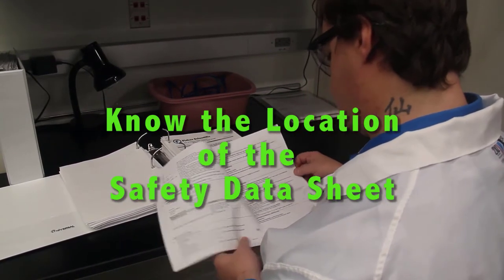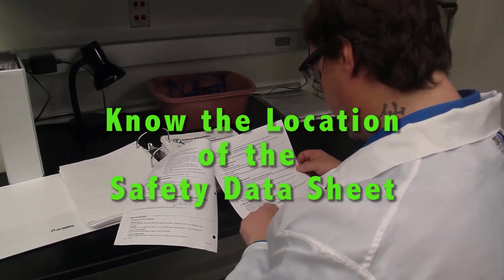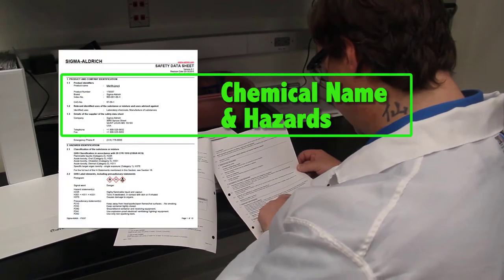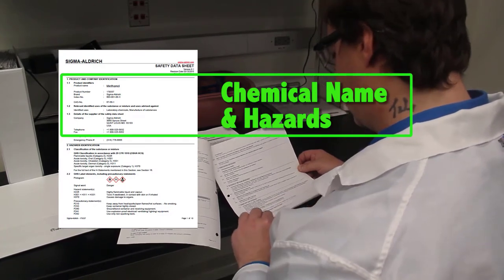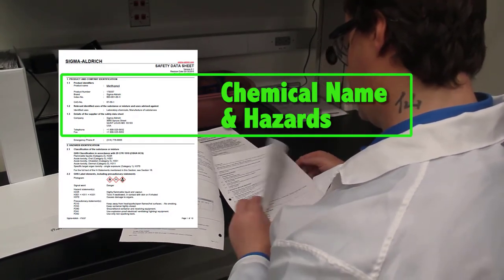The SDS binder is frequently located near the lab entrance. The first page of the SDS tells you critical information for chemical identification and potential health hazards.